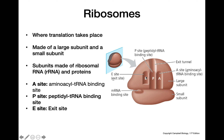Lastly we have the E site, which is the exit site. When the ribosome moves down again — a process called translocation — the older tRNAs that have already added their amino acid to the polypeptide chain enter the E site and then exit the ribosome to be reloaded. One important thing to note: the only time a tRNA would not go first to the A site is for the very first amino acid, which is methionine — specifically a special kind called formyl-methionine. That tRNA goes to the P site first instead of the A site, because there is nothing for it to attach to if it went to the A site first. Every subsequent tRNA comes to the A site first.